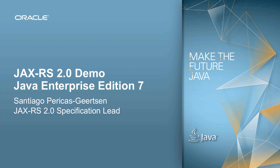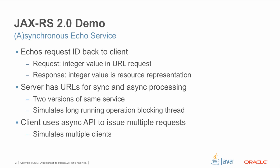We're going to primarily look at synchronous and asynchronous processing. The demo consists of an echo service implemented both synchronously and asynchronously. Each request will have a different ID as part of the URL, and the response will be part of the entity or resource representation. The server will support different URLs for both synchronous and asynchronous processing, and in both cases we're going to be simulating a long-running operation that will block the thread in which the request is being processed.